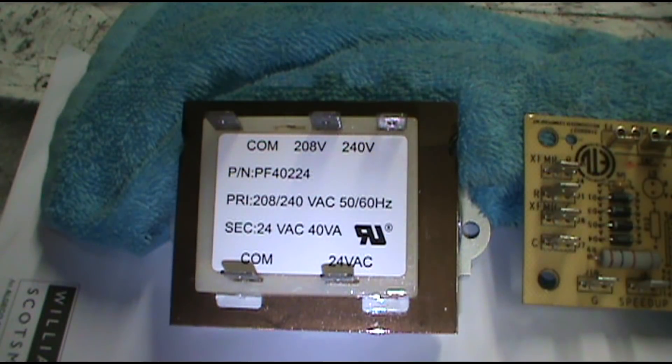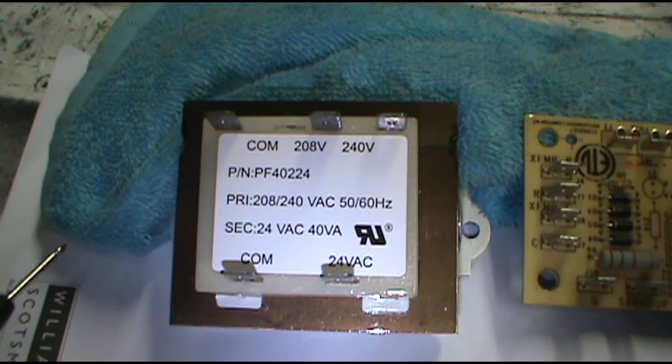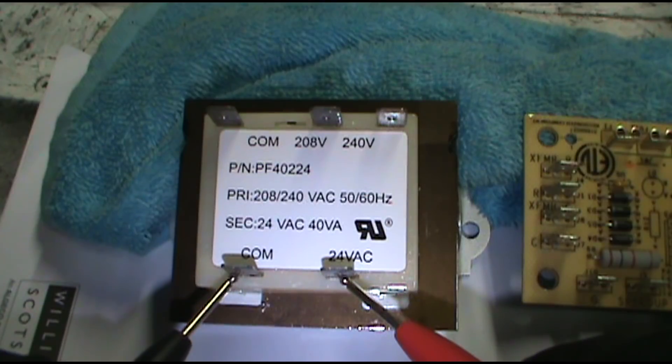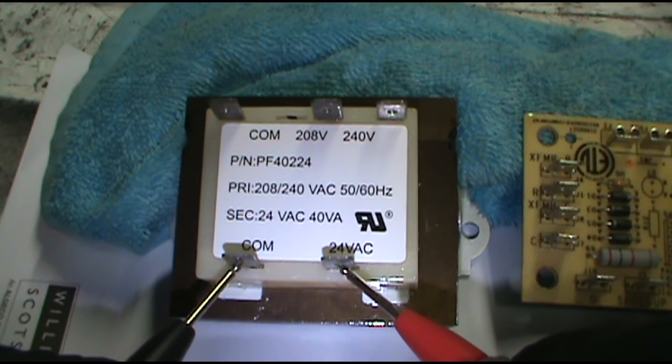All right, let's say you're not getting any low voltage anywhere, no low voltage. First thing I would do is set my meter to AC voltage and touch between 24 volt and common. And if you've got no 24 volts here, you got a bad transformer. You need to replace it.